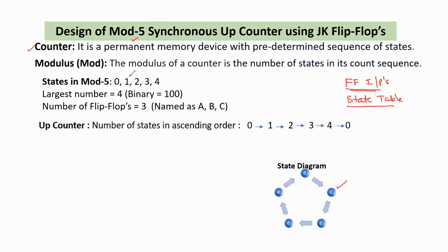Here, mod 5 means we take states 0 to 4 only. Out of these 5 states, the largest state is 4. The value 4 in binary form is 100. So to store this state value, it requires three flip-flops. These three flip-flops are labeled as A, B, and C, and the type of flip-flop is the JK flip-flop. The type of the counter is an up-counter.